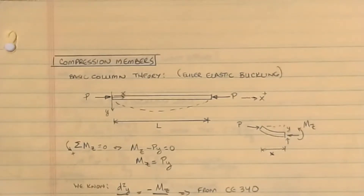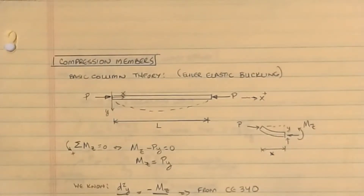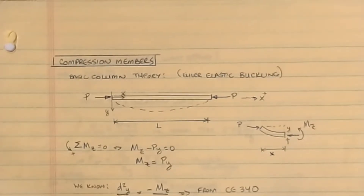Hello my steel design friends. In this video I'm going to show you the basics of Euler elastic buckling and some mechanics approaches to column theory. This will be a mechanics of materials review and we'll basically show you the basis for the methodology that AISC will employ in future videos. So without further ado, let's get started.